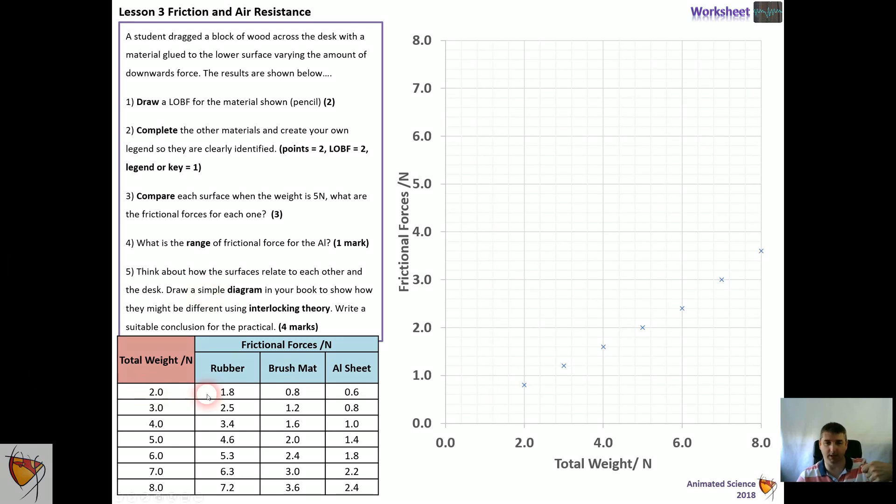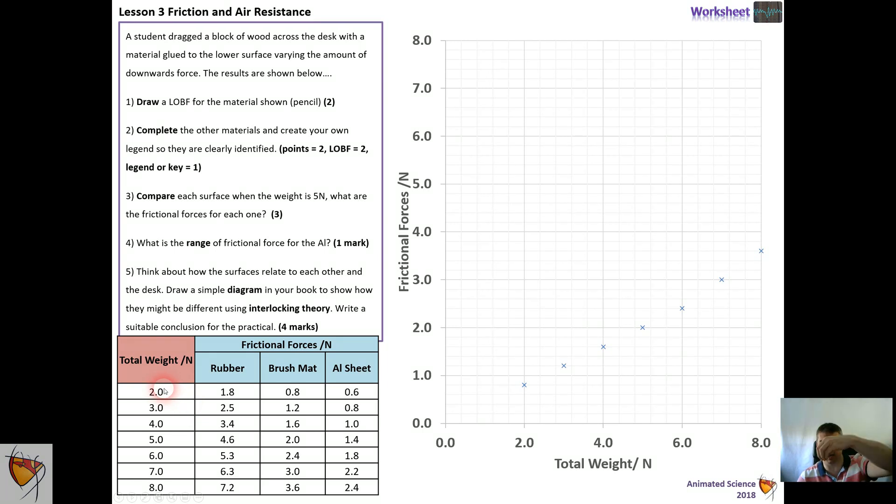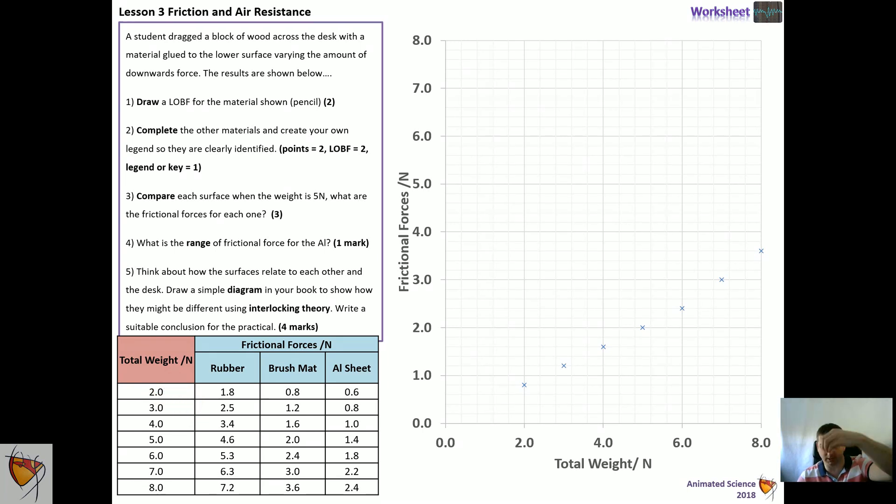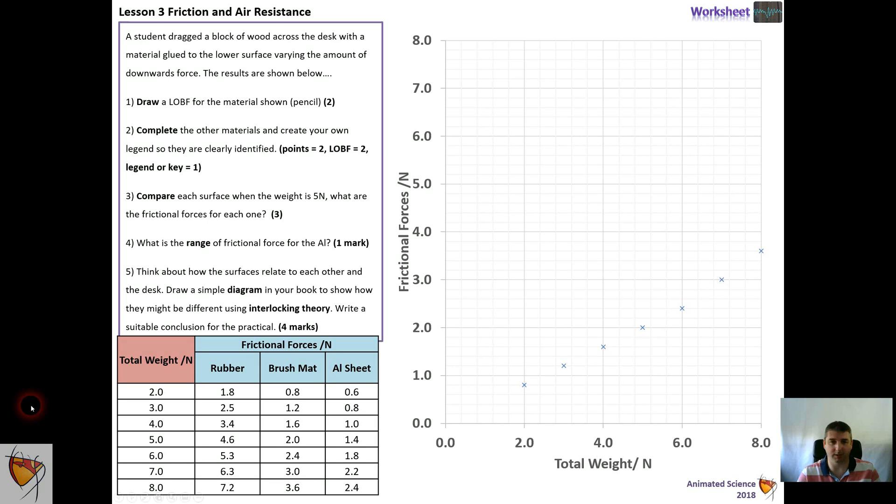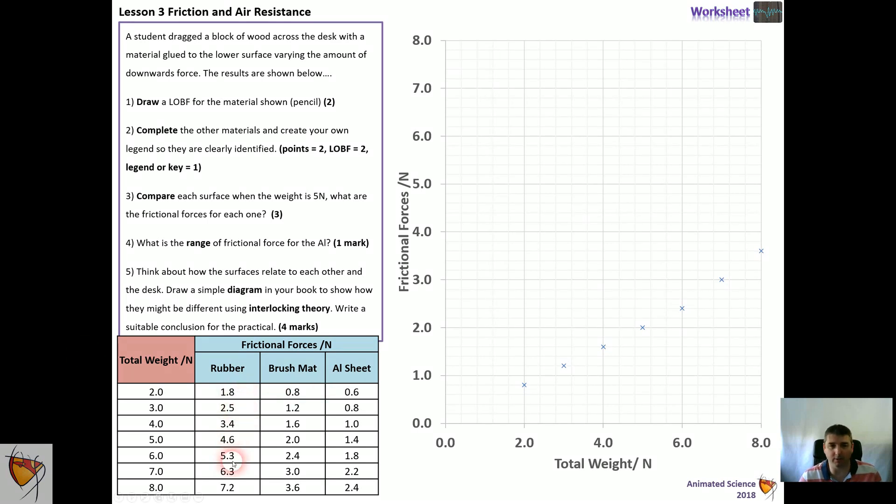Now the weight, the total weight—so that's the block itself plus weights. So what you do is you add weights on top. Of course, as the weights sit on top, the surface and the wood get pushed further and further together, and of course the surface of the rubber, the brush mat, the aluminum—and so the frictional forces go up. So you can work through the little tasks here, do some interlocking theory stuff.